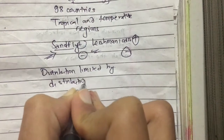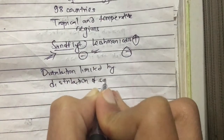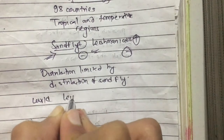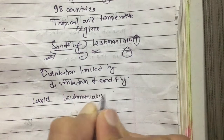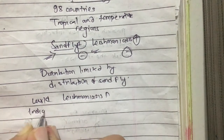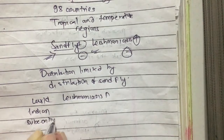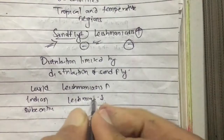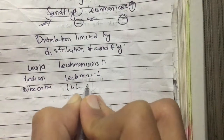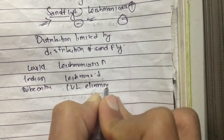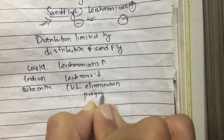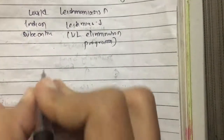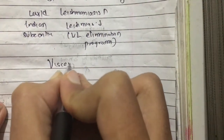In the world, leishmaniasis is increasing, whereas in the Indian subcontinent, leishmaniasis is decreasing. This is because visceral leishmaniasis elimination programs are being conducted in the Indian subcontinent, so leishmaniasis is decreasing there.